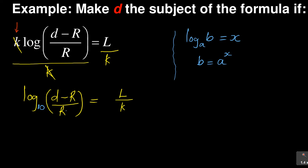So I'm going to use this kind of a law in this case. I'm going to say my b is (d - R) over R. This is representing d is equal to 10 to the exponent L over k. So that is actually how I can get rid of the log and then by interchanging or introducing some exponents there.